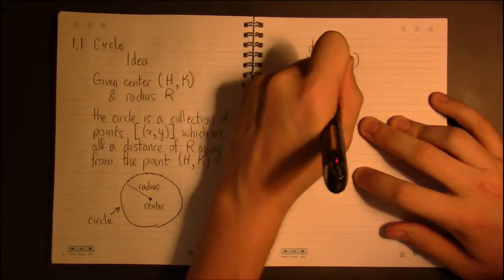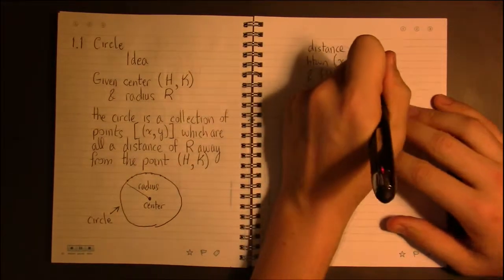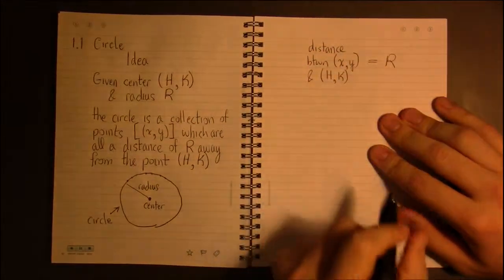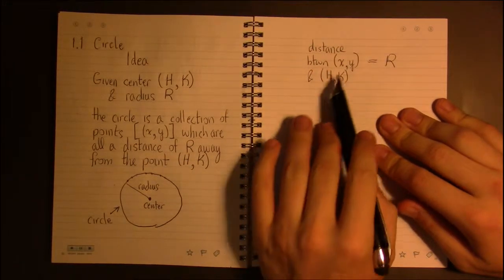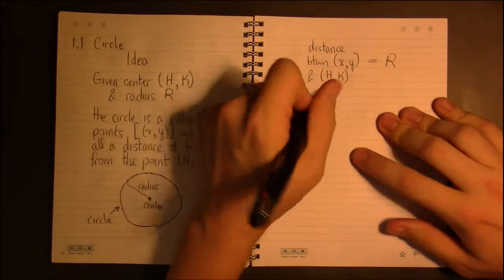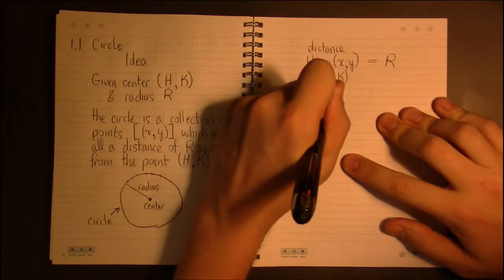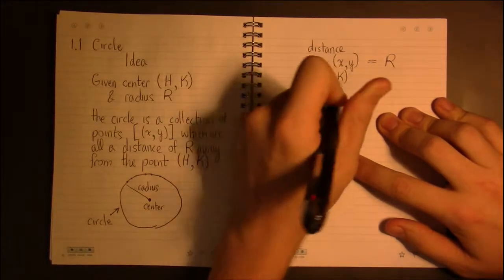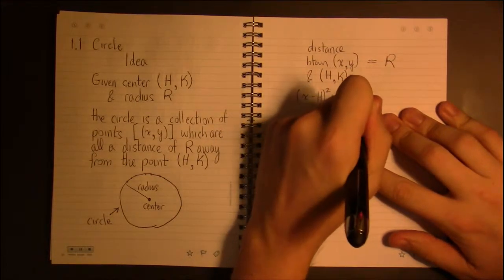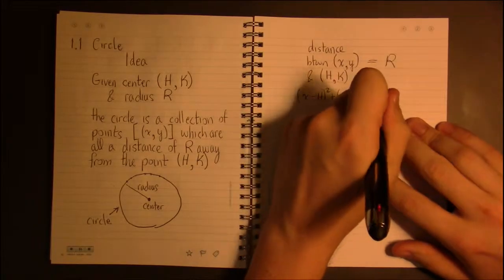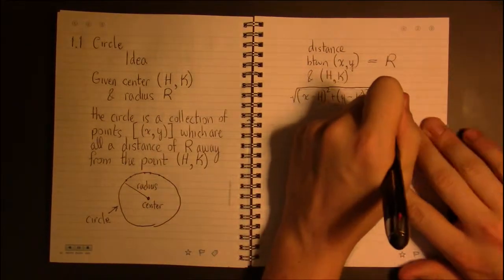But we know how to write the distance between two points. You take the difference in X's, square that, take the difference in Y's, square that, take the square root and that's your distance.